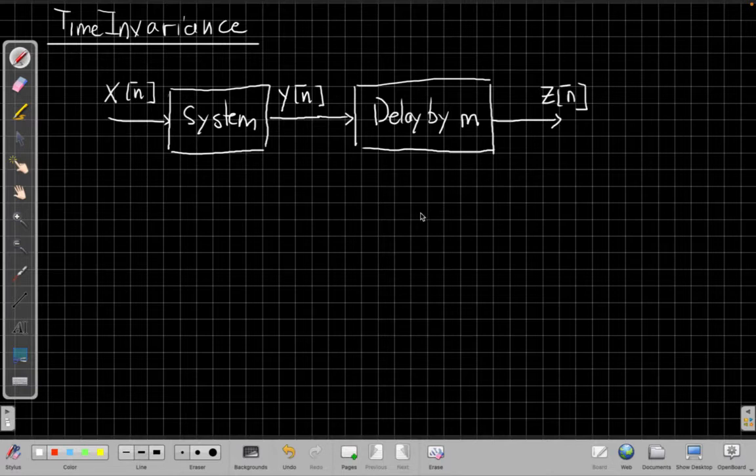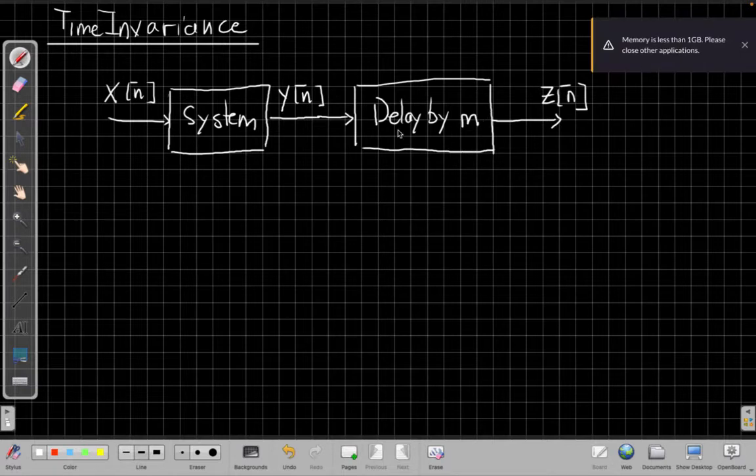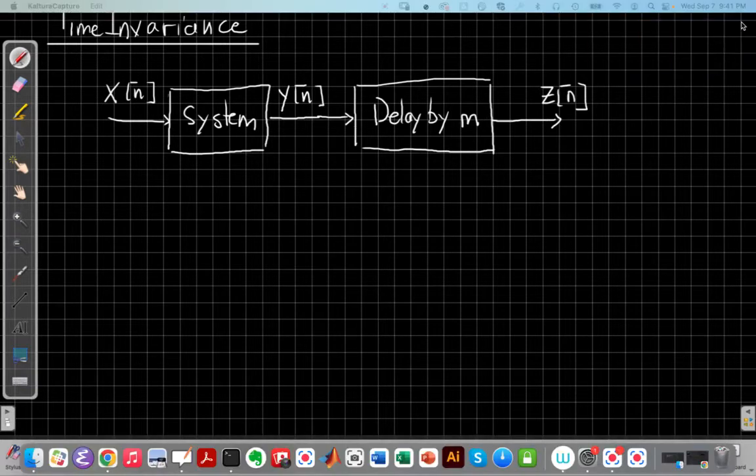And if the system is time invariant, it says we'll get the same output if we do this or if we do the boxes in the other order.